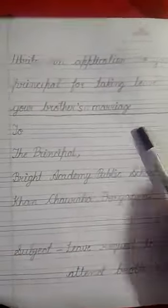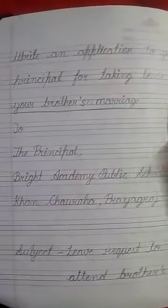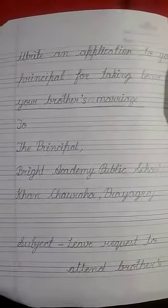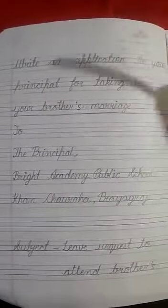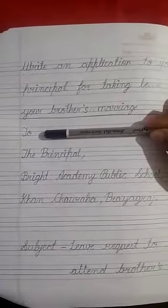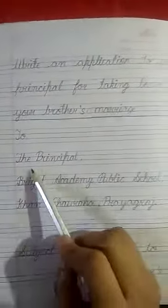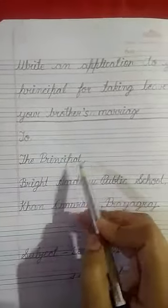So this application is for taking leave for your brother's marriage. Suppose your brother's marriage is there, so you need to leave from school and give an application to your school. At the top of the page, you have to write 'To,' then mark a comma. In the next line, write 'The Principal.' Don't write any other name here.